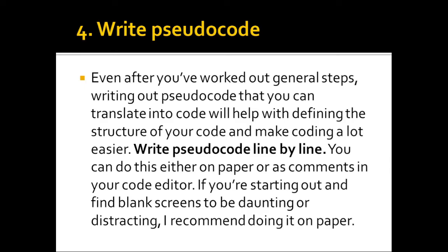The fourth step is to write pseudocode. Even after you work out general steps, writing pseudocode that you can later translate into code helps with defining the structure of your code and makes coding a lot easier. Write pseudocode line by line — you can do this either on paper or as comments in your code editor. If you find a blank screen daunting, writing on paper is recommended. Pseudocode resembles a programming language but you don't have to worry about the syntax — focus on the logic, not the syntax.